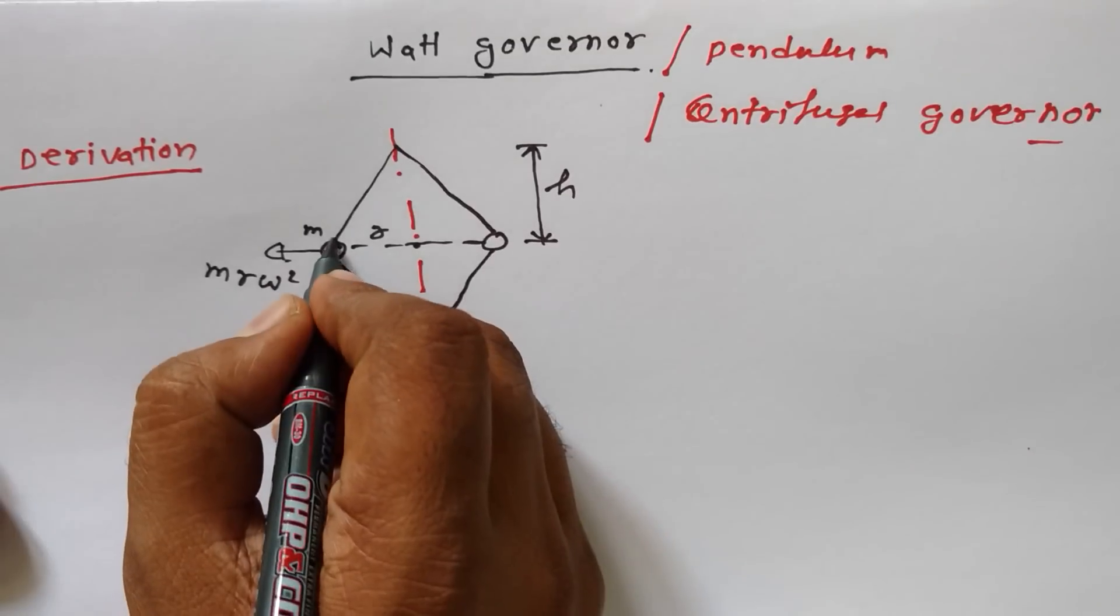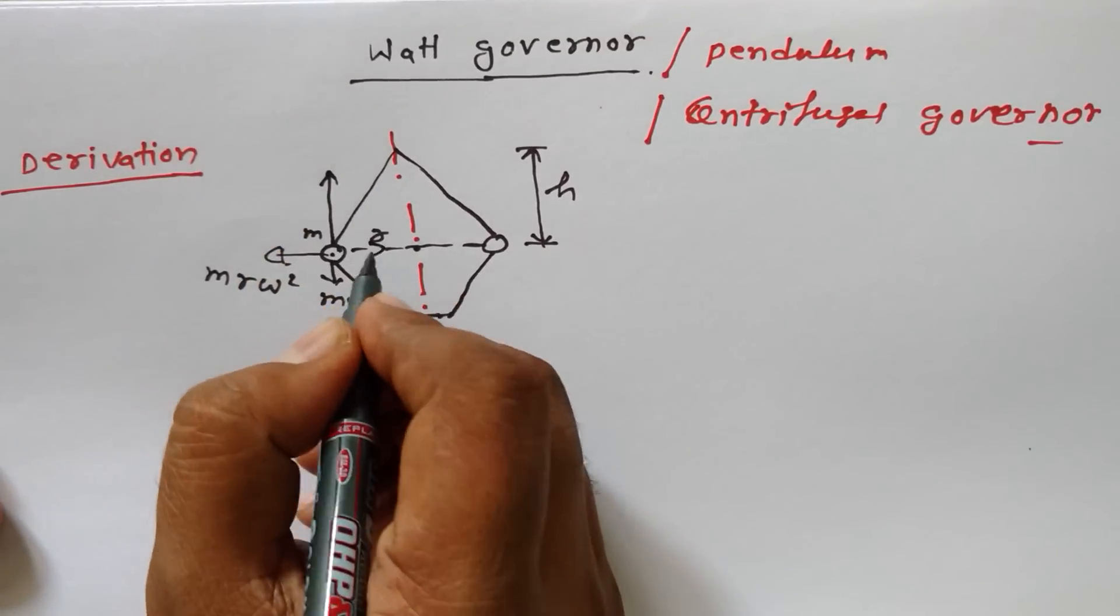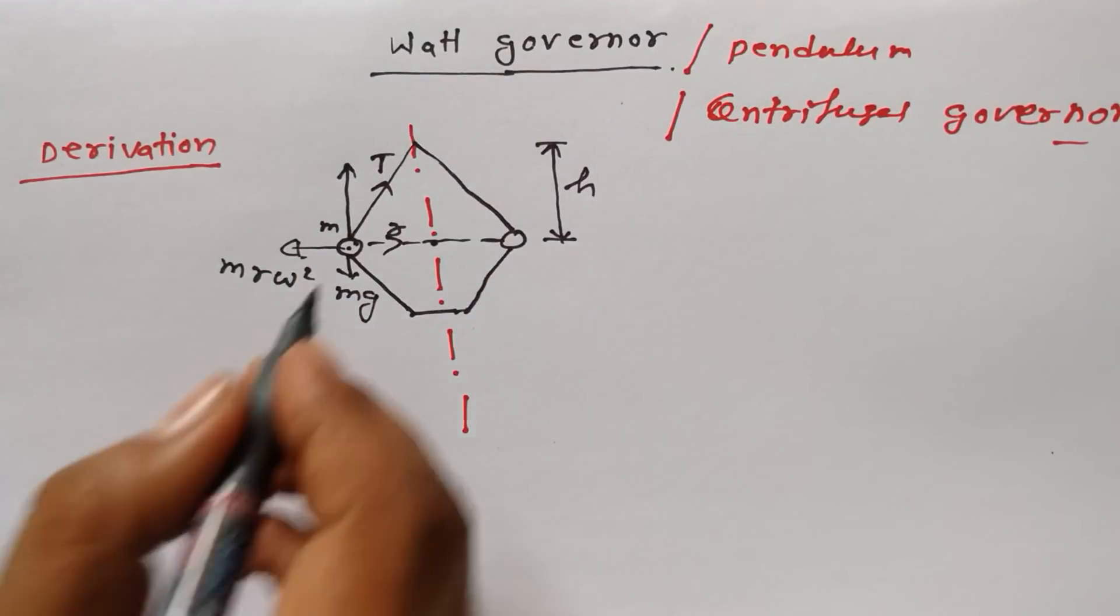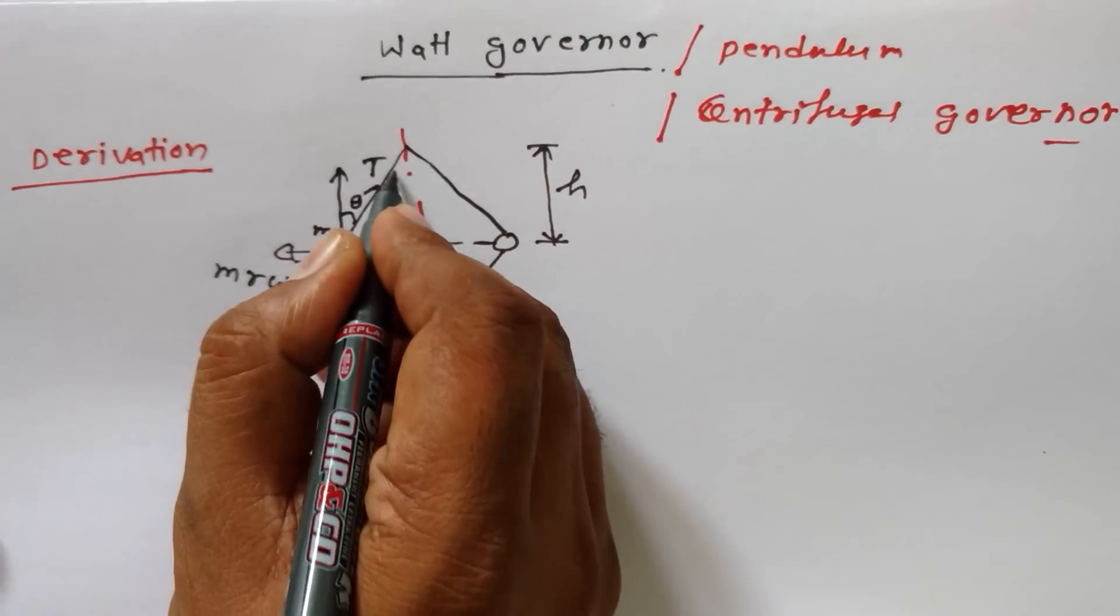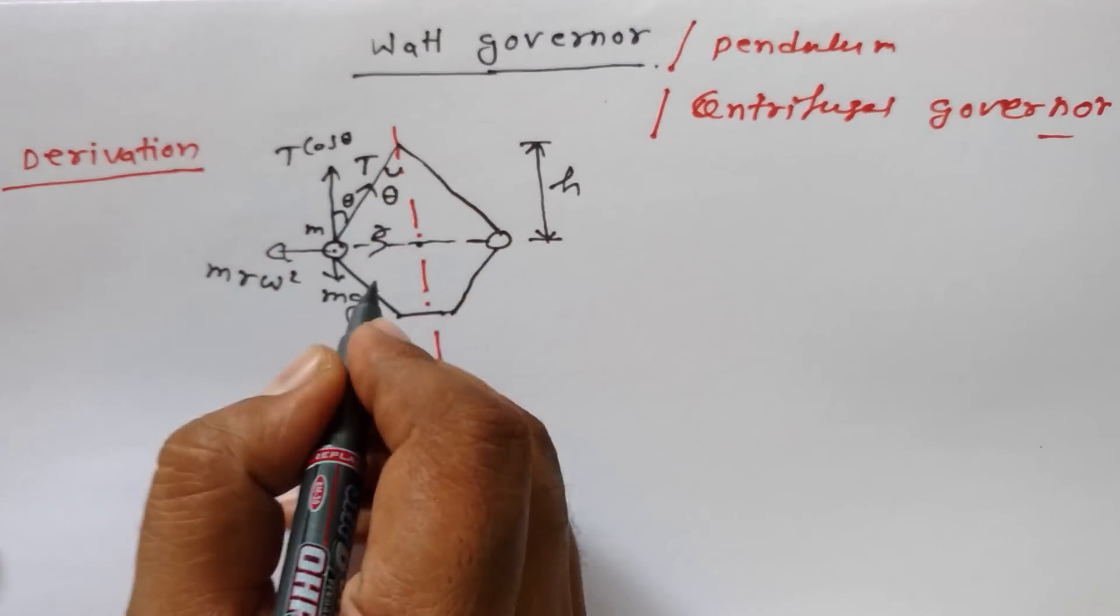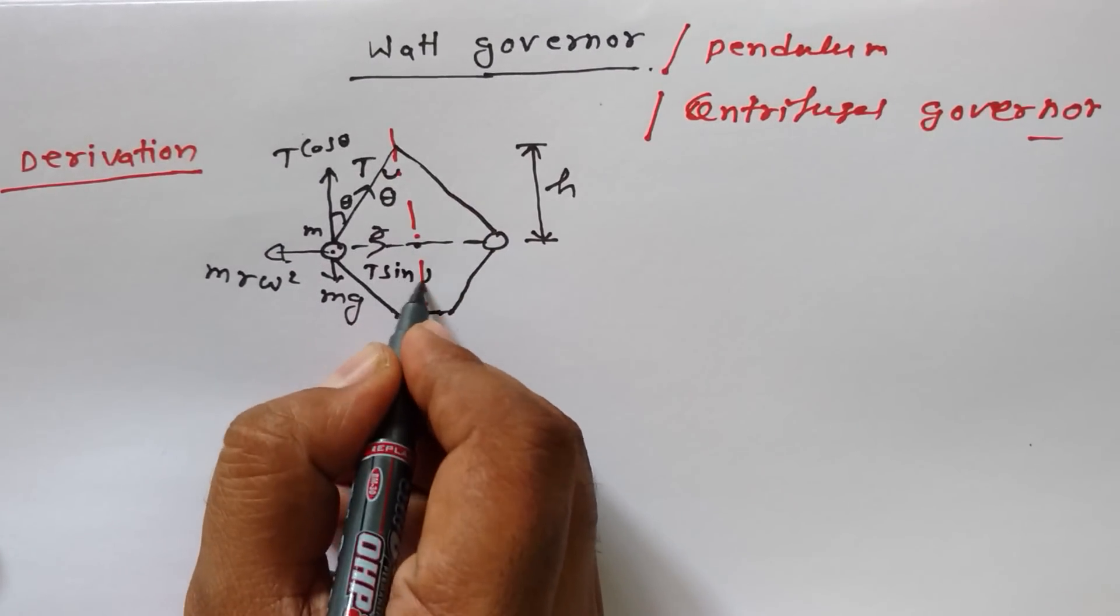Here we have a force that is tension T. We're giving angle θ, both are same, so this side is T*cos(θ) and this side is T*sin(θ).